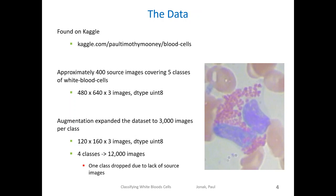The data used for this project was found on Kaggle at the URL shown here. For viewers not familiar with Kaggle, it is an online platform for data science competitions involving prize money or the chance to interview at the hosting company, and it is a good place to find datasets to apply your machine learning skills. The dataset consists of approximately 400 images covering five classes. Exploring the data revealed that one class, basophils, had very few images, so we dropped basophils from analysis and used augmentation on the remaining four classes to expand the dataset, generating 3000 images per class.